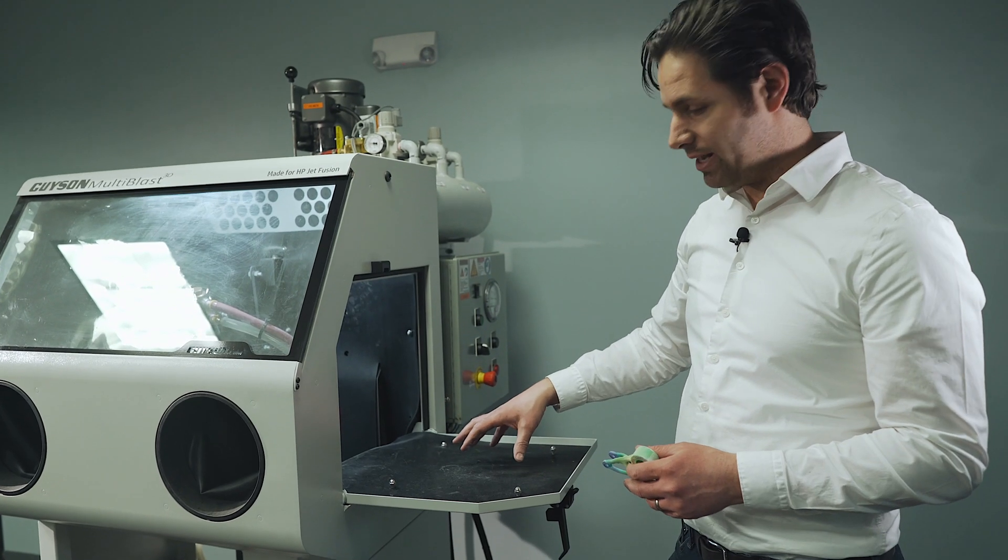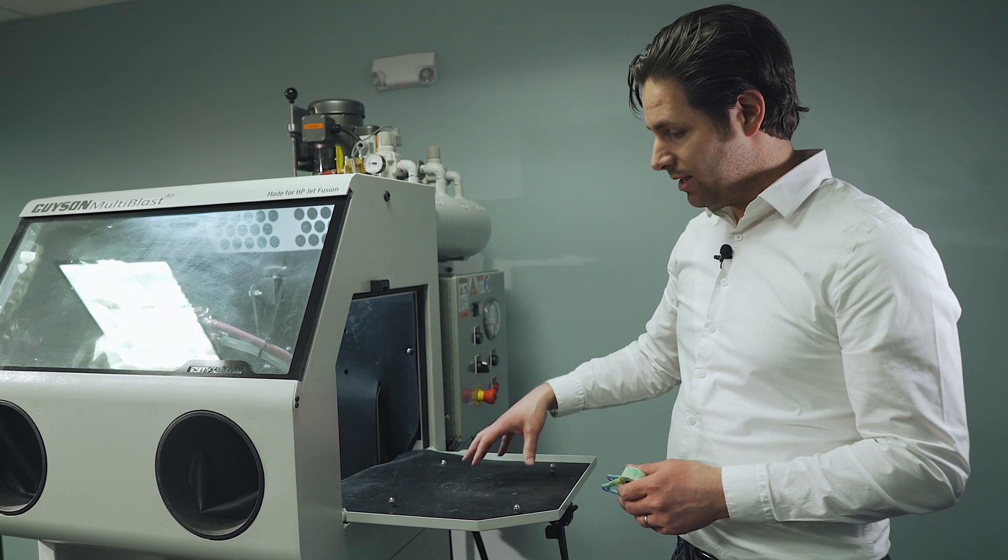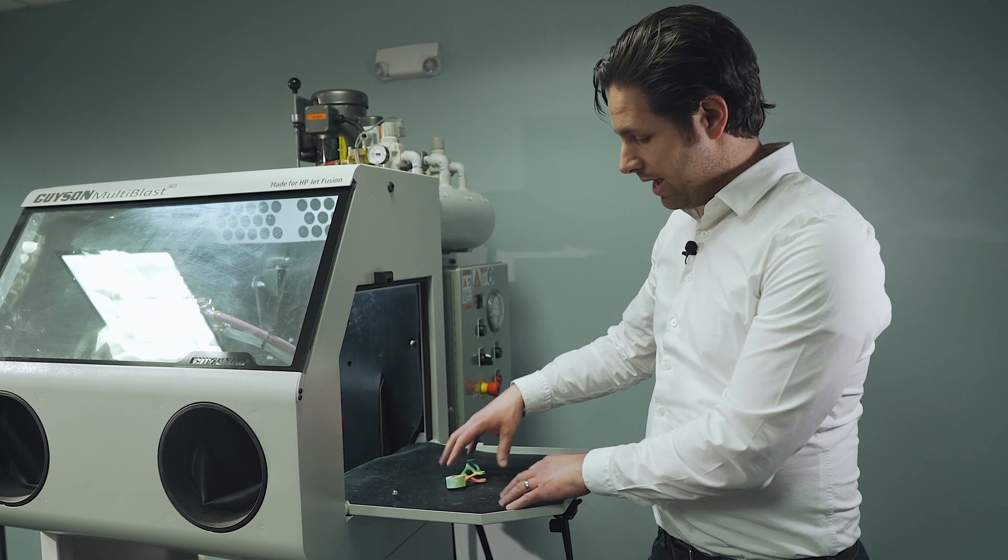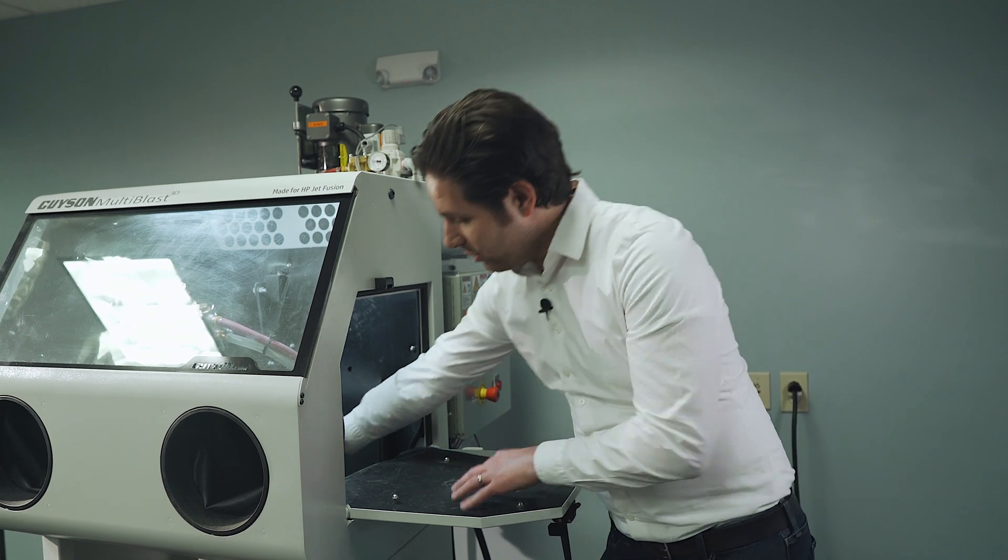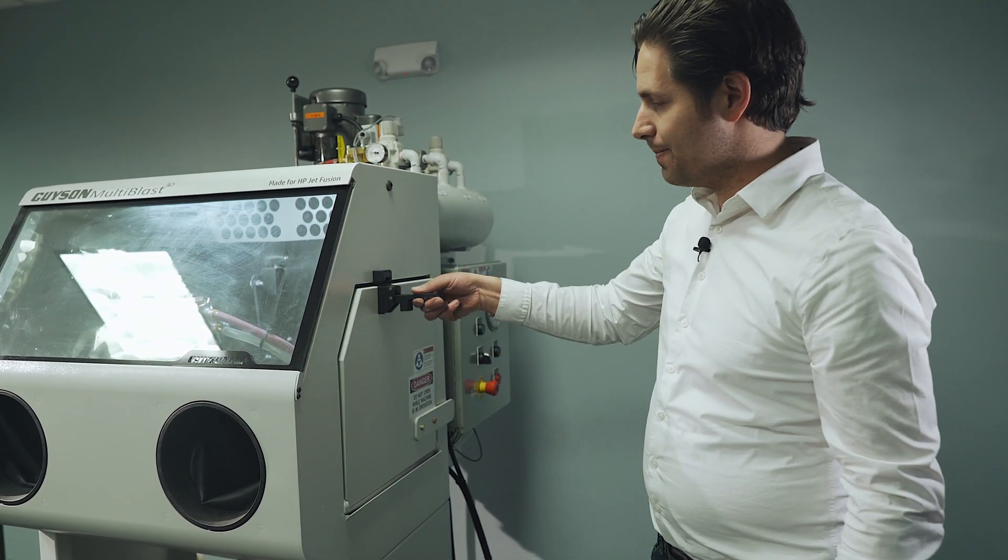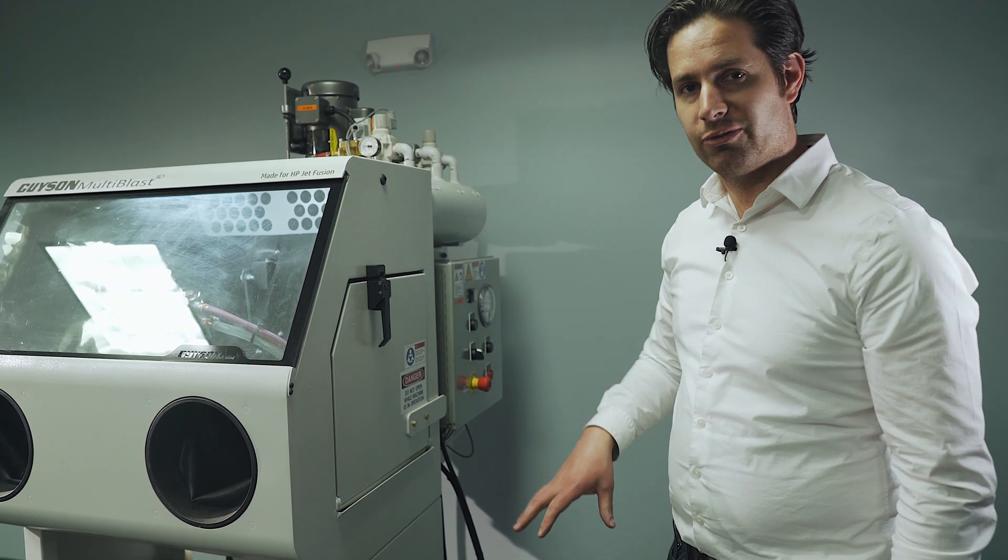The Multiblast 3D has a flip down door design. This has a perimeter which encloses the center of the door. Any media that winds up on the door, when you close the door, will fall into the cabinet. This keeps the area around your machine clear and free of debris.